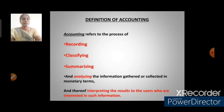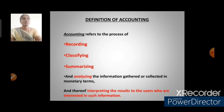Recording is a process of entering each and every transaction in a particular manner — it may be in journal books or in subsidiary books. Classifying is a process of grouping transactions in a predetermined manner; classification takes place in a separate book known as the ledger. Summarizing means the classified data in the ledger is presented periodically in an easily understandable manner — in the form of a profit and loss account, trading account, or balance sheet.